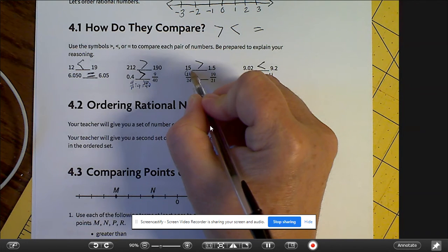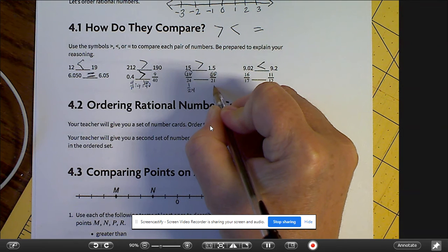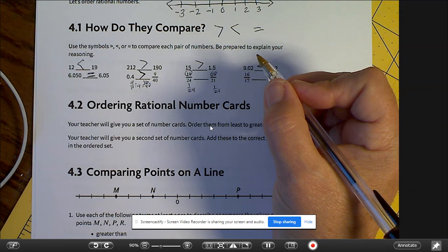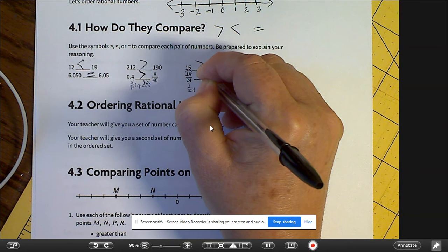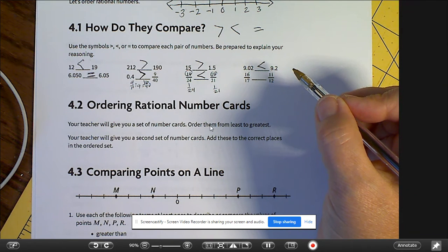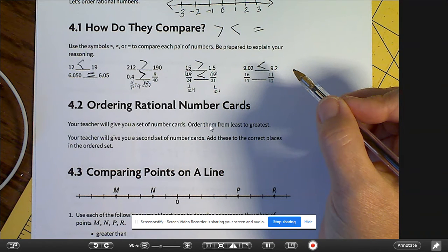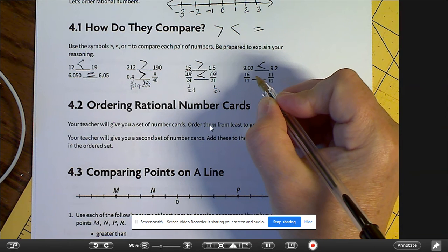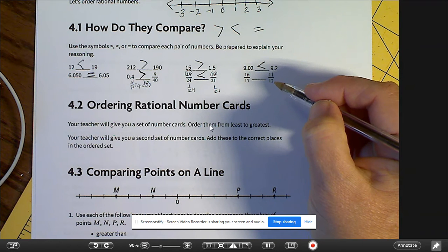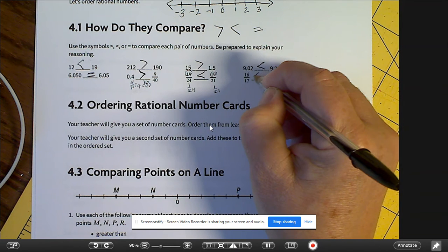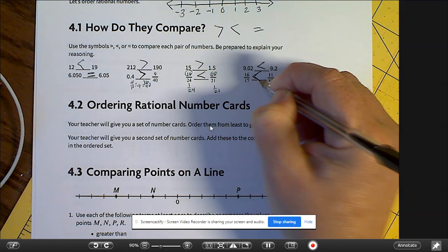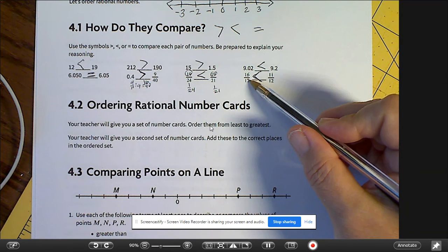Because it's the same numerator, you can say 1.24 and 1.21, and so that makes 1.21 is greater. So this one is greater. That one is less than. 16/17 and 11/21. So they're both—so this is one unit from a whole. So if you had 17/17 and this one is one unit, this is 12/12. And 1/17 is less than 1/12.